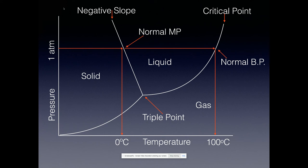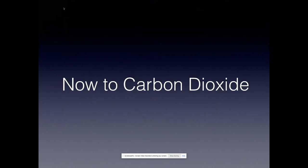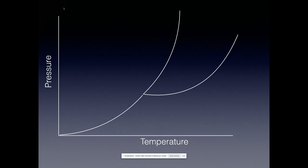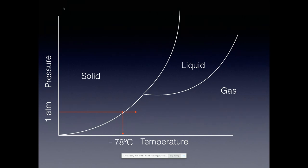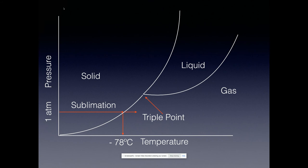Carbon dioxide is different — it has a positive slope between the solid and liquid on its phase diagram. Carbon dioxide sublimes at one atmosphere; the temperature at which that happens is about -78°C. There is also a triple point and a critical point. The key thing to note is the positive slope of the solid-liquid line, which means the liquid is less dense than the solid — the opposite of water.